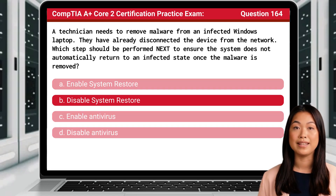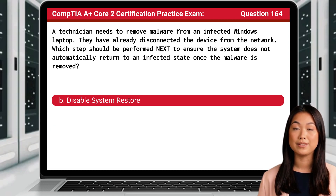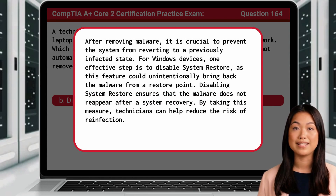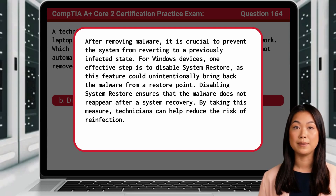The answer is B: Disable system restore. After removing malware, it is crucial to prevent the system from reverting to a previously infected state. For Windows devices, one effective step is to disable system restore, as this feature could unintentionally bring back the malware from a restore point. Disabling system restore ensures that the malware does not reappear after a system recovery, helping reduce the risk of reinfection.